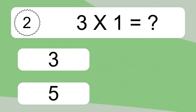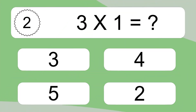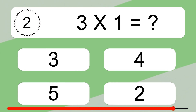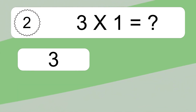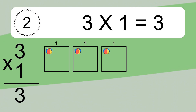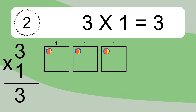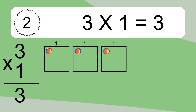3 times 1 equals what? 3 times 1 equals 3. We have 3 boxes, and each box has 1 colorful ball inside. If you count all the balls in all the boxes together, you will have 3 times 1 balls. This equals 3 balls.